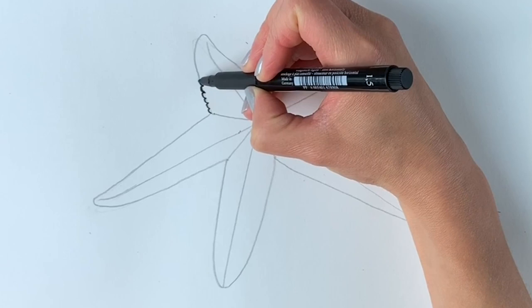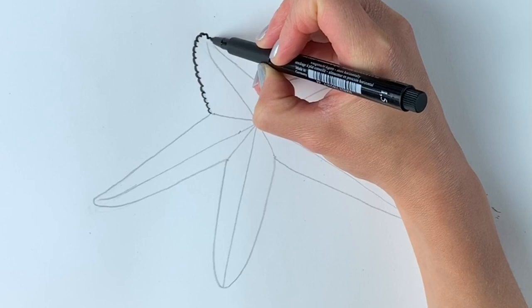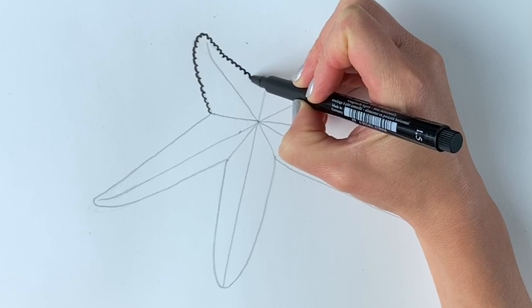Just do tiny little bumps all the way along the edge of the starfish. It's going to show that it's got a bumpy exterior. So just do this the whole way along.